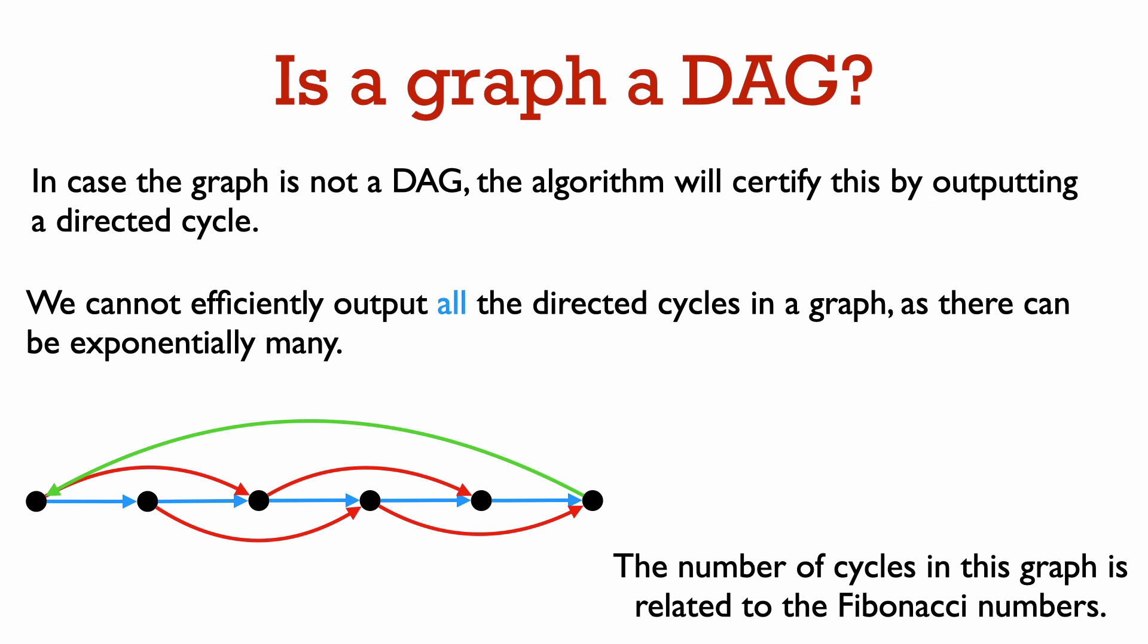We actually cannot efficiently find all the directed cycles in a graph, because there can be exponentially many of them. In this example graph here, we have one-step and two-step edges directed from left to right.